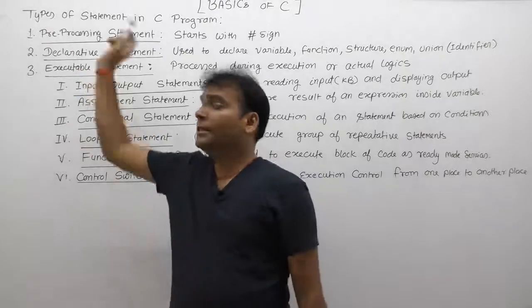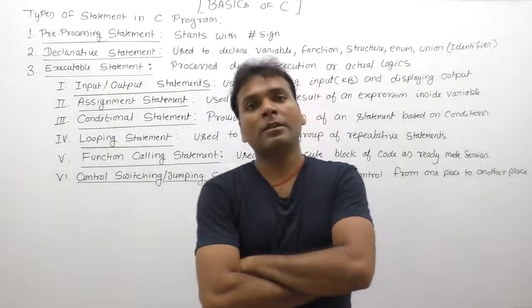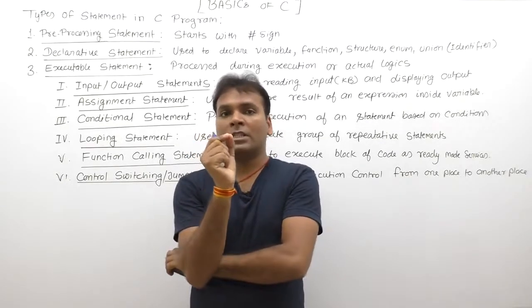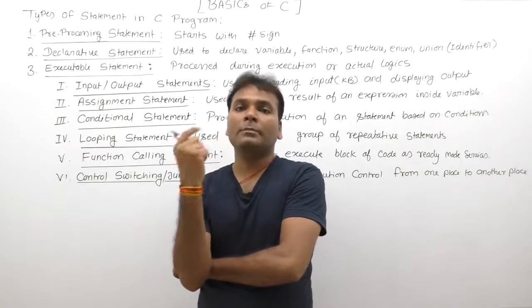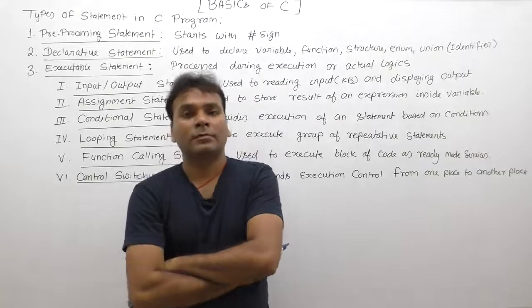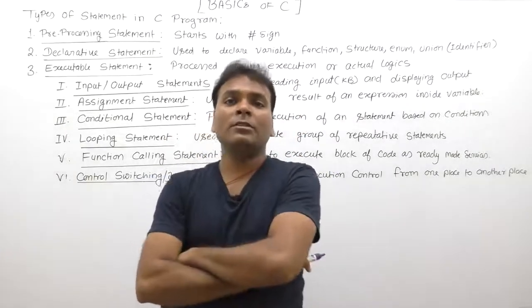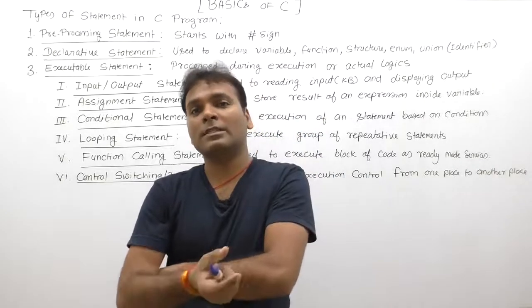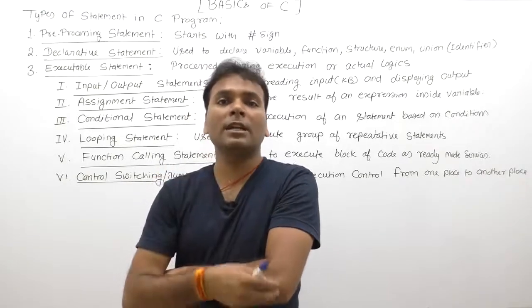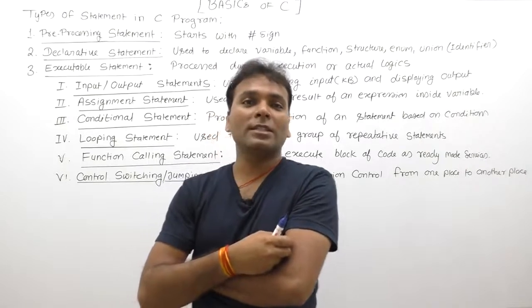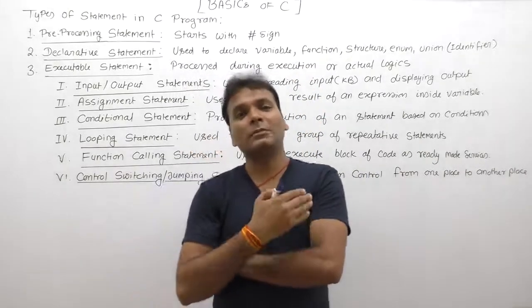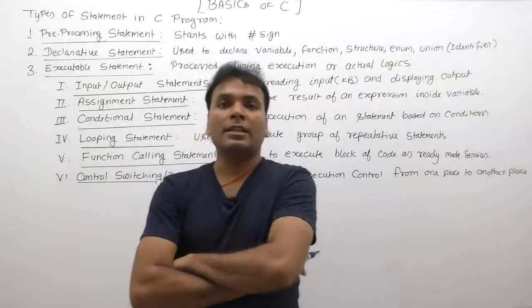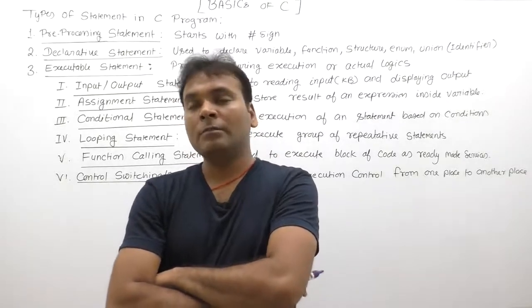Types of statements in C language — how many types are available, and what is the use of statements? A statement is the single smallest unit which is a part of our program, separated by semicolon or by lines. A program is a collection of related statements. In our program we use different types of statements like conditional statements, control switching statements, iterative statements, function calling statements, and assignment statements. Statements are divided into three categories: pre-processing statements, declarative statements, and executable statements.